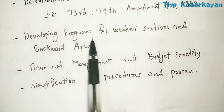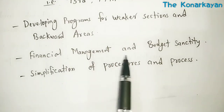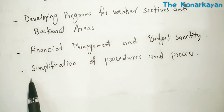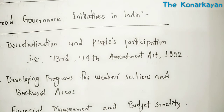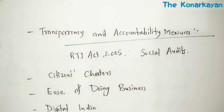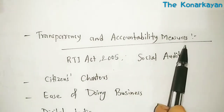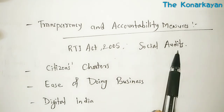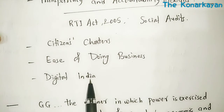Second is developing programs for weaker sections and backward areas. Third is financial management and budget sanctity. Fourth is simplification of procedures and processes. Fifth is transparency and accountability measures, which include the RTI Act 2005, social audits, citizen charters, ease of doing business, and Digital India.